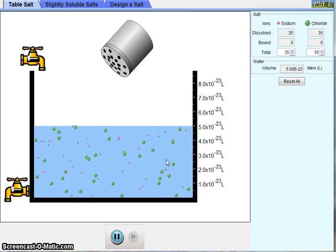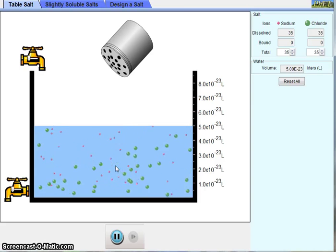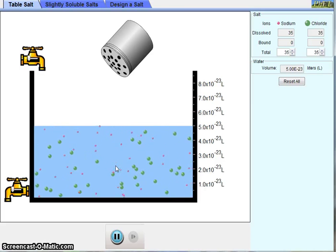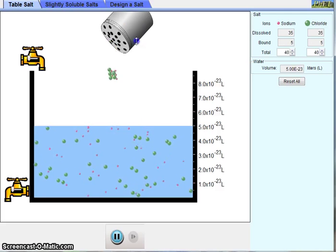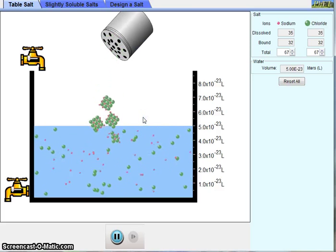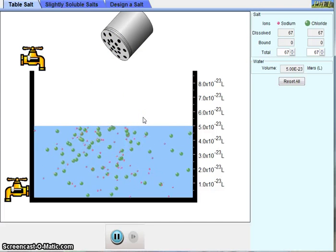At this point, we would say that this is an unsaturated solution of sodium chloride. It's unsaturated because if we add more salt, that added salt is going to go through that process of dissolving.